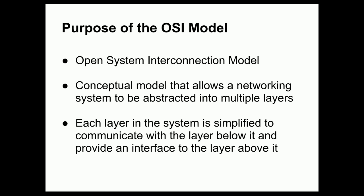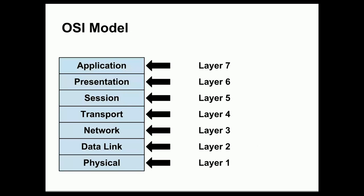Each layer maintains a certain amount of independence from the other layers. There are seven layers in the OSI model. Starting from the bottom: layer 1 is the physical layer, layer 2 is the data link layer, layer 3 is the network layer, layer 4 is the transport layer, layer 5 is the session layer, layer 6 is the presentation layer, and layer 7 is the application layer, which conceptually communicates with the presentation layer.